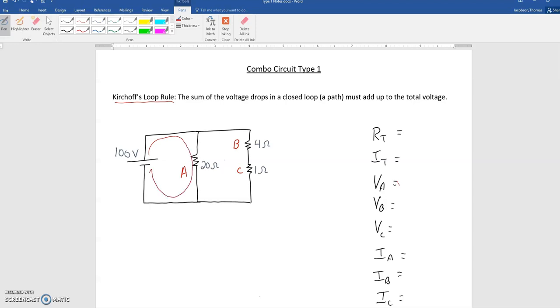let's say this path that goes through A, the voltage drops of all the resistors in that path must add up to the total voltage, which in this case is 100 volts. Now if you look, there's only resistor A in this path, which means that resistor A has a voltage drop of 100 volts.